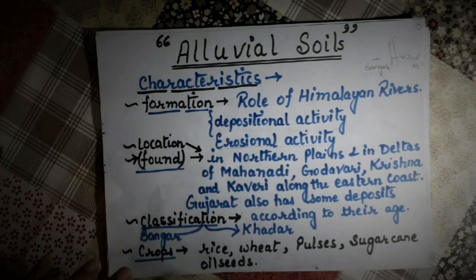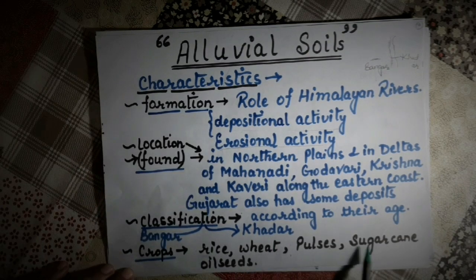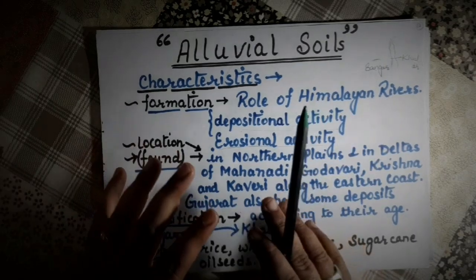Crops suitable for alluvial soil include rice, wheat, pulses, sugarcane, and oilseeds.